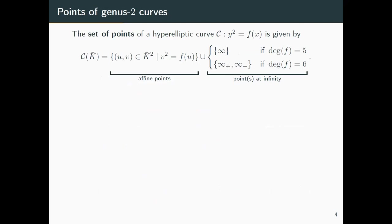Briefly, about points on hyperelliptic curves — the situation is comparable to elliptic curves. We need to distinguish the cases where degree of f is 5 and where it is 6. In general, we have affine points of the form (u, v) satisfying the hyperelliptic equation v² = f(u). If the degree is 5, there is exactly one point at infinity; if the degree is 6, there are two points at infinity, denoted ∞⁺ and ∞⁻.